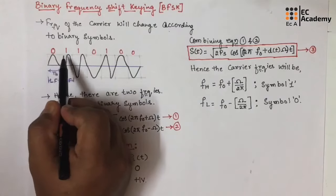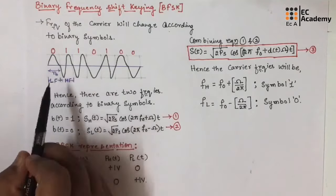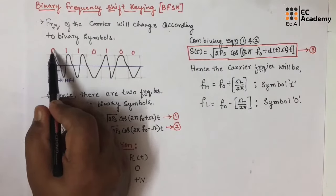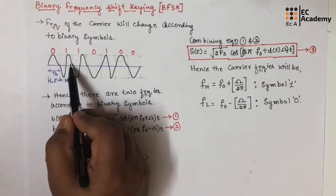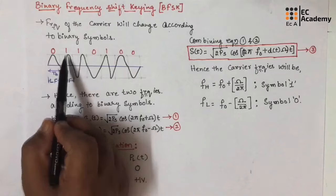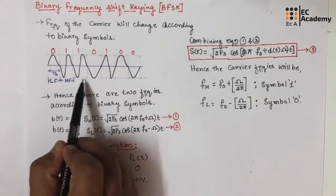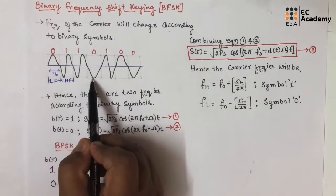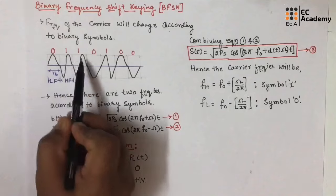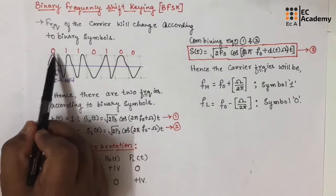Let us take a binary sequence as an example: 0, 1, 1, 0, 1, 0, 0. For this sequence, the frequency of the carrier signal is low when the symbol is 0, and the frequency of the carrier signal is high when the symbol is 1. This process continues — for 1 the frequency is high, for 0 the frequency is low. Hence, we can say there are 2 frequencies according to the binary symbols: high frequency and low frequency depending upon the binary symbol.